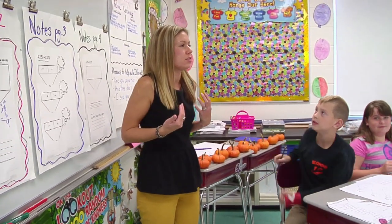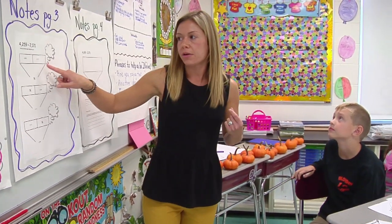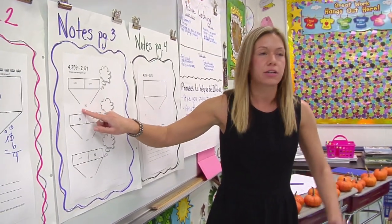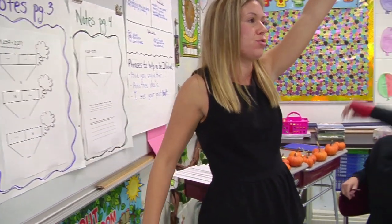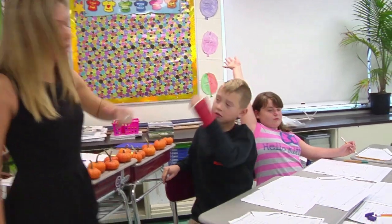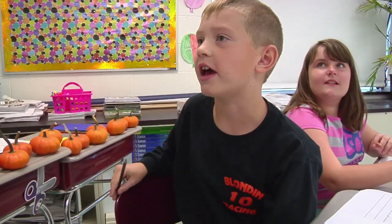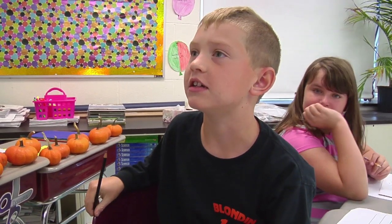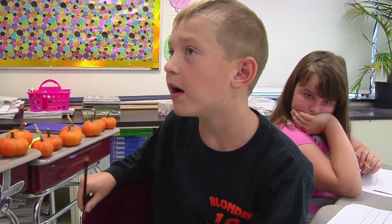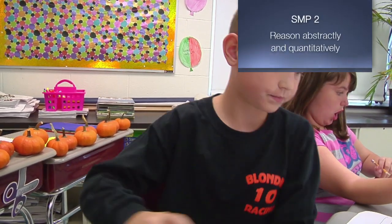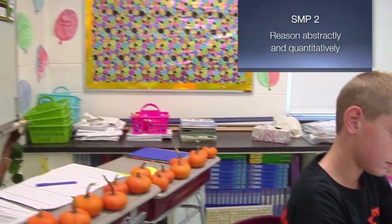Let's bring it back together and have a discussion. This first one right here where it says 4,259, 2,171, and N — can someone raise your hand and tell me what is that saying to you? Ryan, what does that one say to you? It's saying that you need to add them two to find out the whole. And is that what I'm asking you to do in this problem? No, it says 4,259 minus 2,171. So I'm going to cross this one out — it cannot be that one because it's modeling addition.